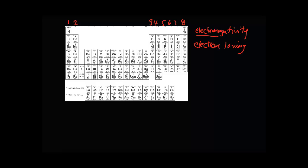Groups 5, 6, and 7, nine times out of ten, are going to want to gain electrons: 3 if it's in group 5 to make 8, 2 in group 6 to make 8, and 1 electron in group 7 to make 8.